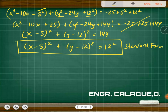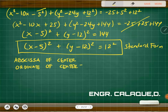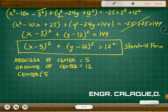If you're asked for the abscissa and ordinate of the center, you can already see them here. The abscissa is 5, the ordinate is 12, so the center is (5, 12). And if you're asked for the radius, it's 12.